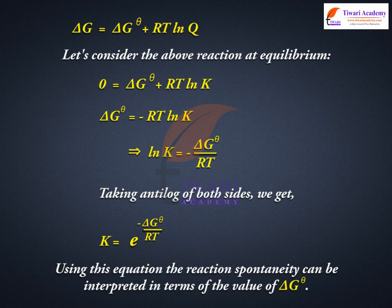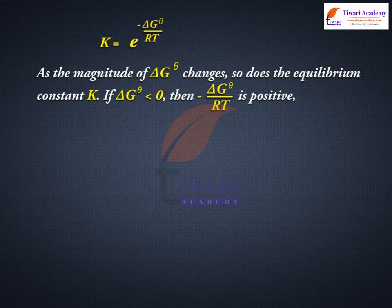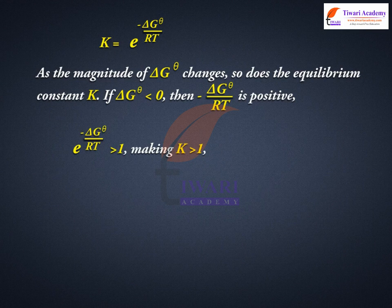Using this equation, reaction spontaneity can be interpreted in terms of the value of delta standard G. As the magnitude of delta standard G changes, so does the equilibrium constant K. If delta standard G is less than 0, then minus delta standard G upon RT is positive and e raised to the power minus delta standard G upon RT is greater than 1, making K greater than 1, which implies a spontaneous reaction.